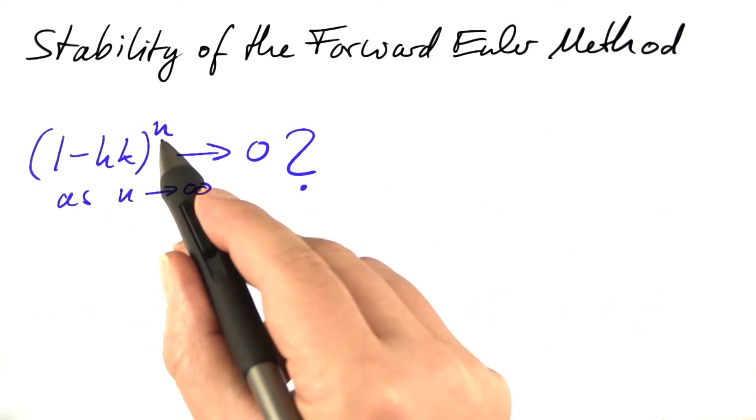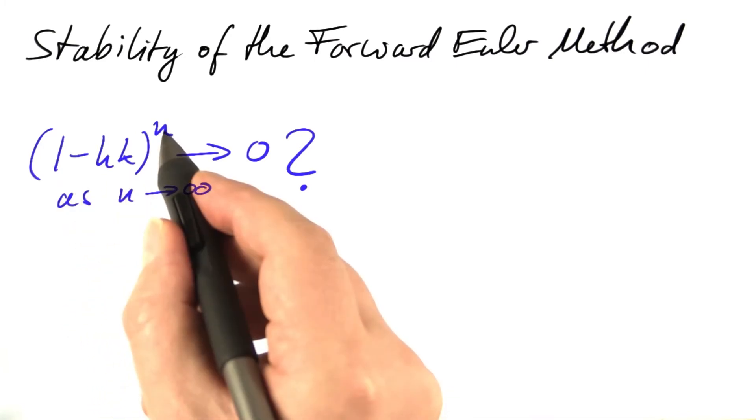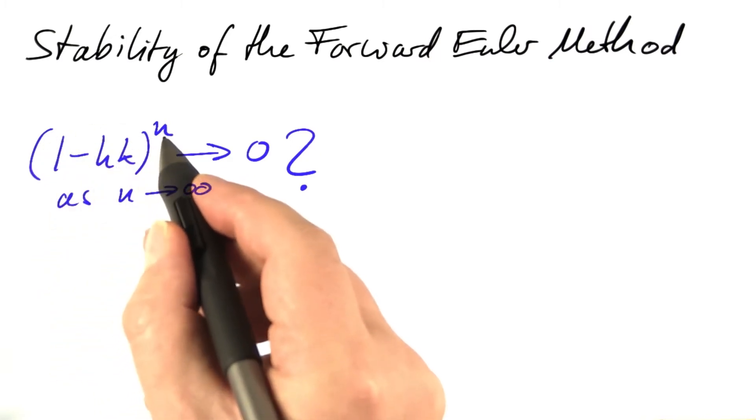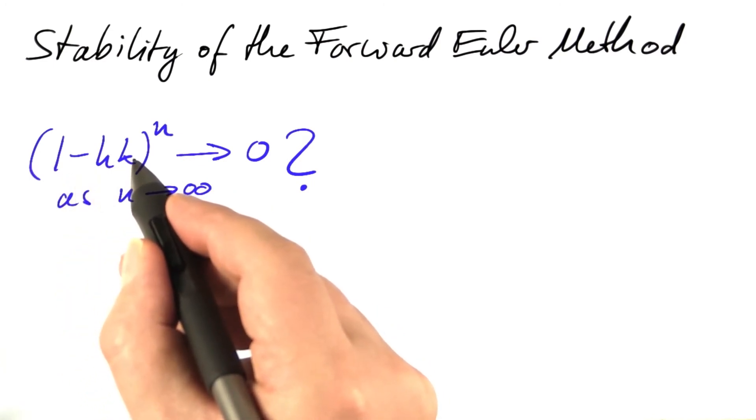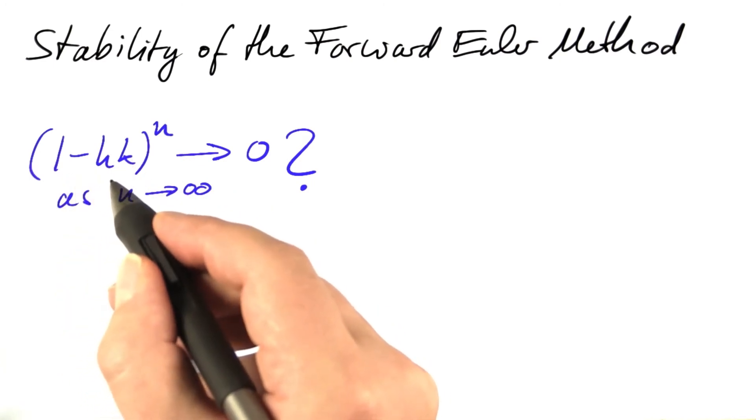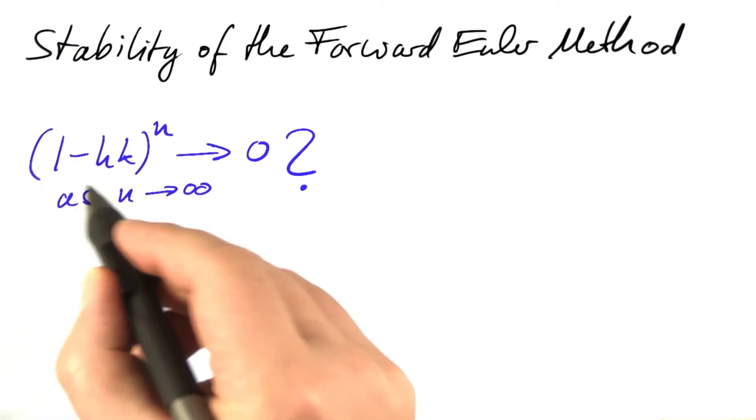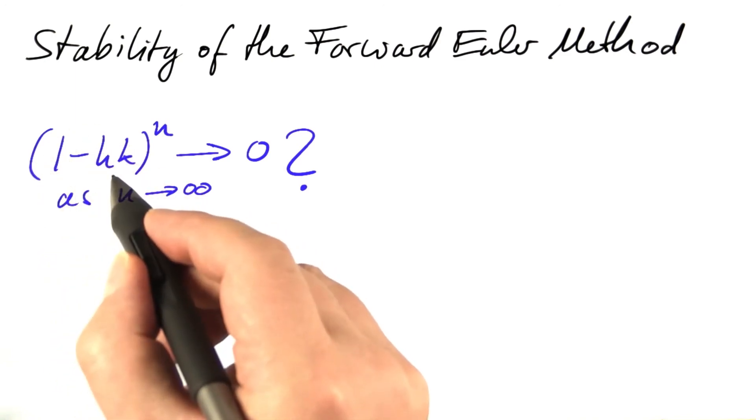So what happens to the nth power of 1 minus hk? We are interested in how large h, the step size, can be. If the step size h gets large, the expression inside the parenthesis becomes negative. We are subtracting from 1. If we are subtracting more than 1, the inner term here gets negative. So the question is, what happens to powers of negative numbers, to some huge power?